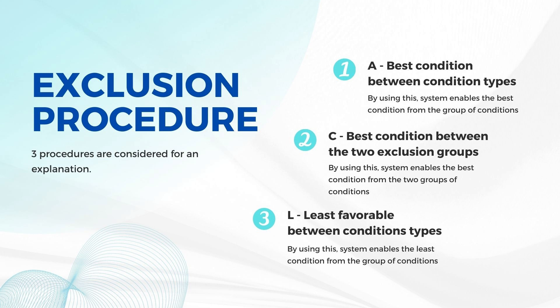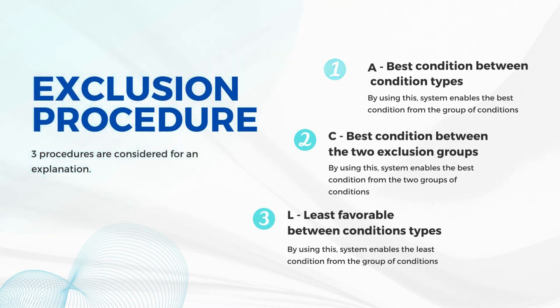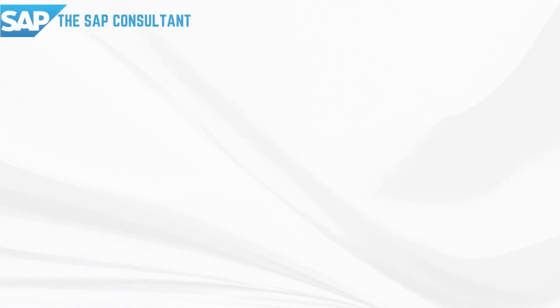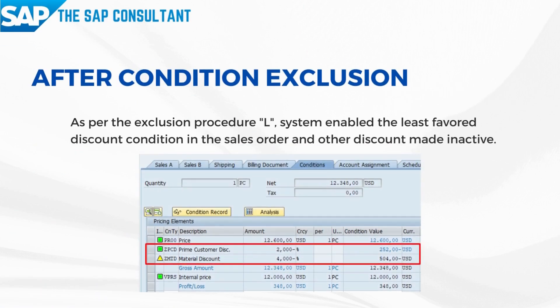Procedure L — Least Favorable Between Condition Types. By using this, the system enables the least favorable condition from the group of conditions. As per the above scenario, we can activate the 2% discount on sale of wardrobe. As part of this session, I have used Procedure L — Least Favorable Between Condition Types.